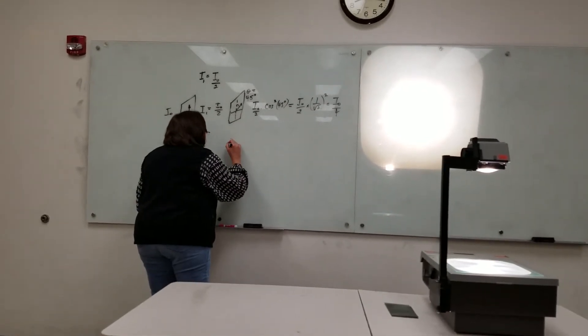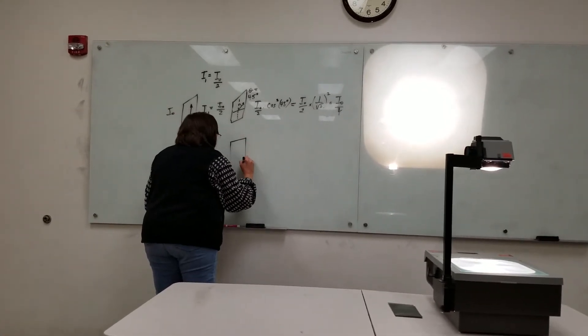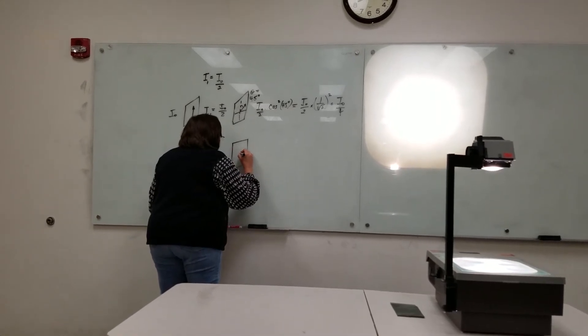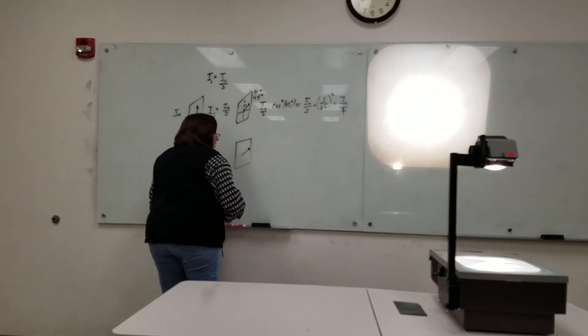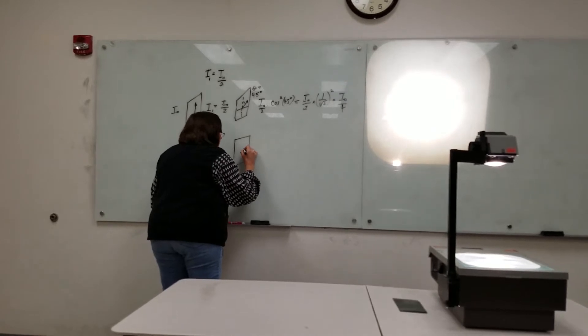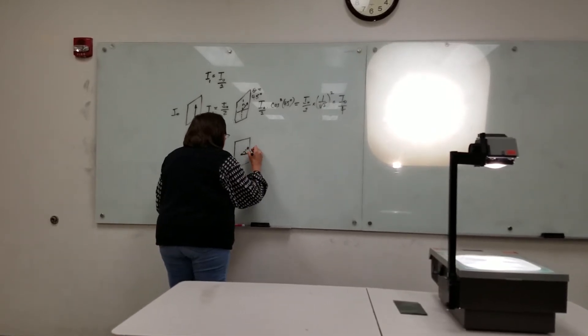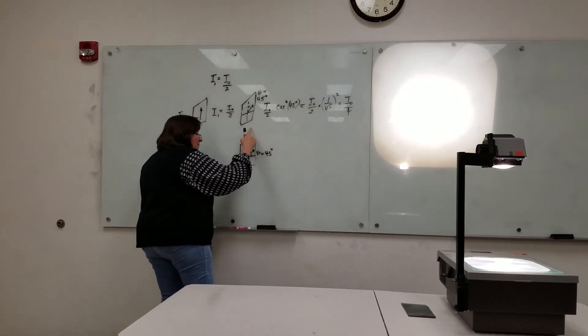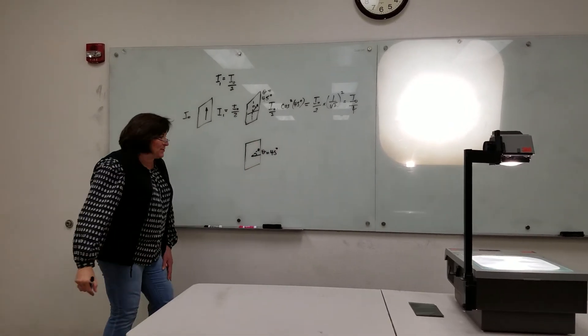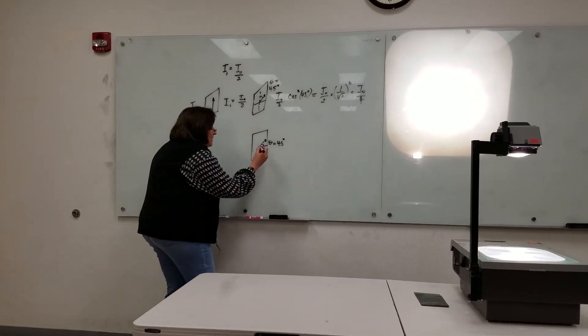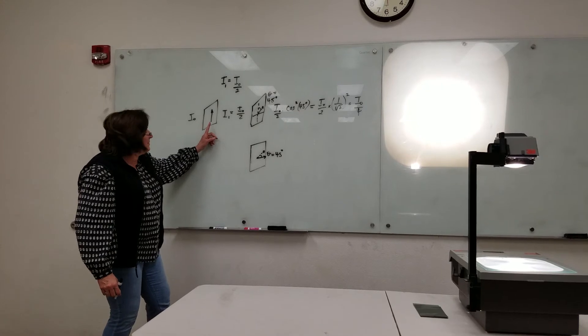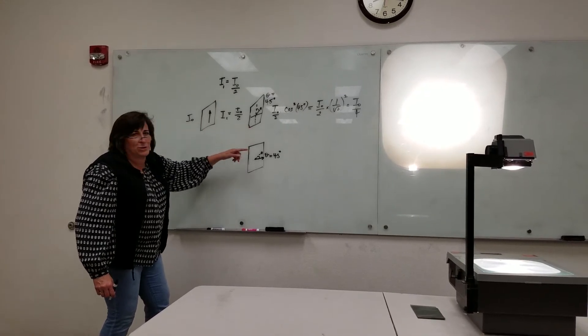Now if we put that light through one more polarizer, this time the original axis was this way. Now we're going to put it perpendicular to the first polarizer. But that means the angle between the successive filters is still 45 degrees. Now the polarization direction is perpendicular to what we had originally, but we've done it in two steps.